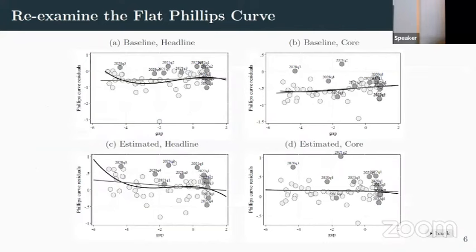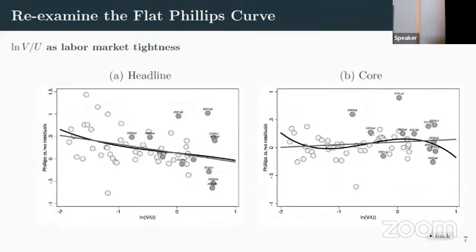We do this for different aspects — headline inflation, core inflation, and estimated versus off-the-shelf baseline relationships — and we get the same pattern: there doesn't seem to be something suggesting that as things got tighter, we're getting bigger errors at that end. If we use vacancy-to-unemployment rate instead of the unemployment gap, we're not finding steepening — if anything, it goes a little bit the other way. This is really relying on what you think inflation expectations are, using the survey of consumer finances, which fits with household-type measures.